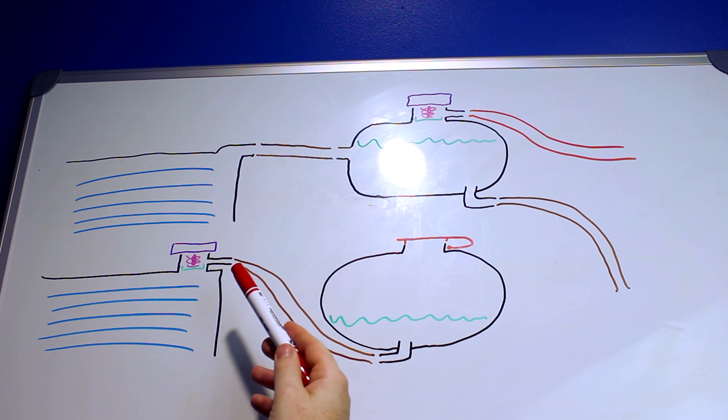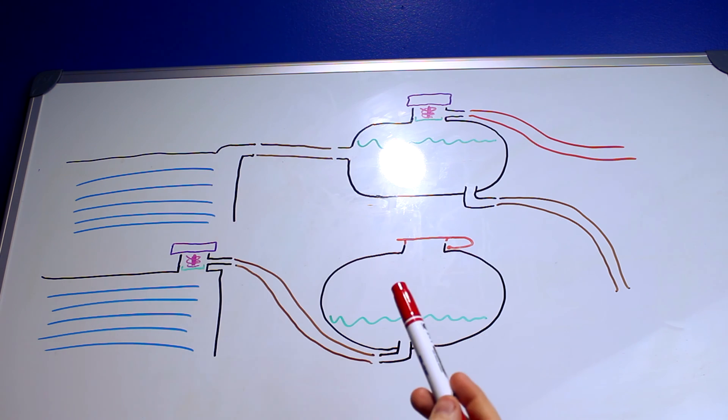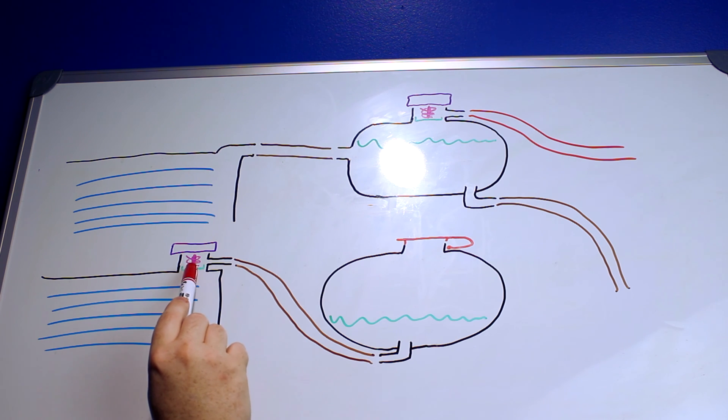This area here is typically the highest point of the pressurized side of the cooling system because you want to get rid of any air that you have. Air that's in the system is going to float to the top and if it's in the radiator the top is right here so as soon as this opens any air bubbles in the system are probably going to be pushed out.